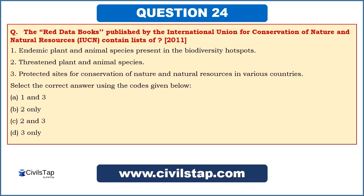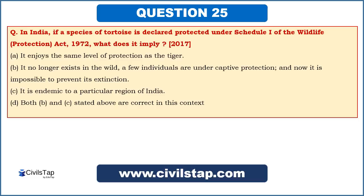The second question: in India, if a species of tortoise is declared protected under Schedule 1 of the Wildlife Protection Act 1972, what does it imply? Options are: A — it enjoys the same level of protection as the tiger; B — it no longer exists in the wild and a few individuals are under captive protection and it is impossible to prevent its extinction; C — it is endemic to a particular region of India; D — both B and C.